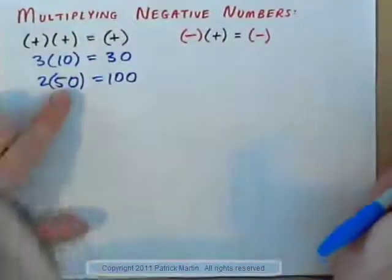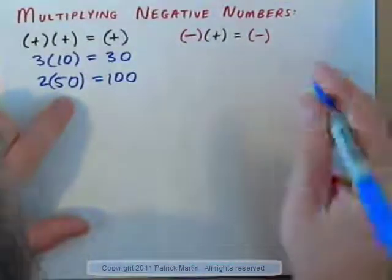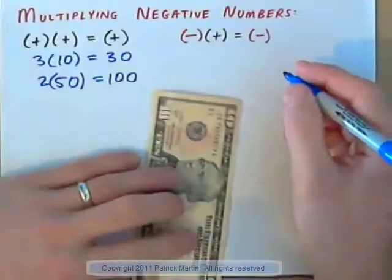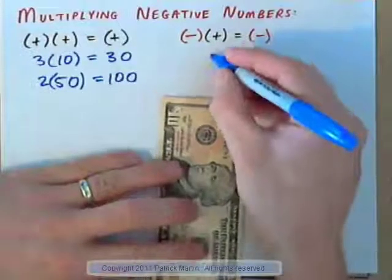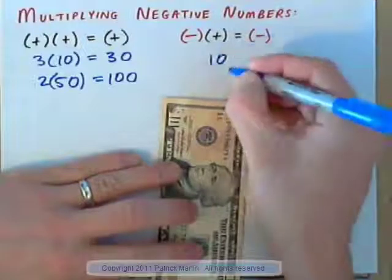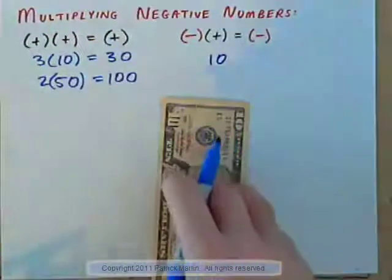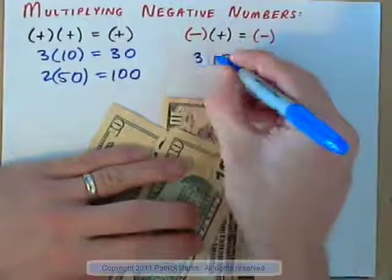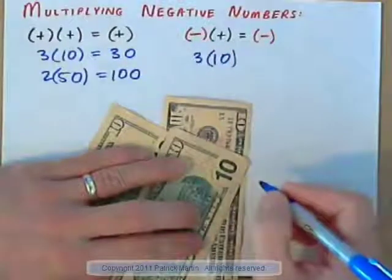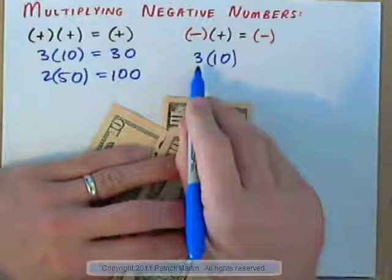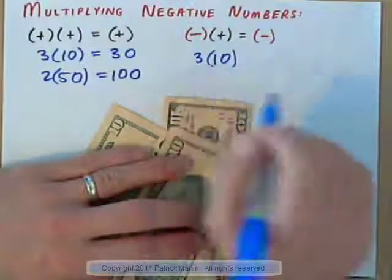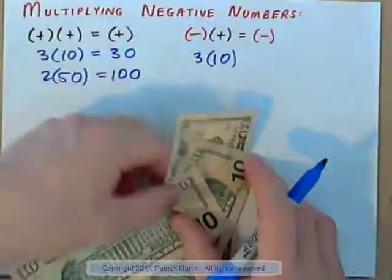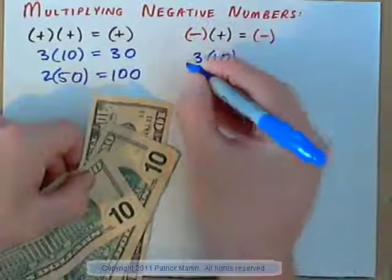How about this situation? You have a $10 bill — that's a positive. Let's say you have three $10 bills; that's 3 times 10, which is $30. Now, let's say we subtract three $10 bills. What would that look like?